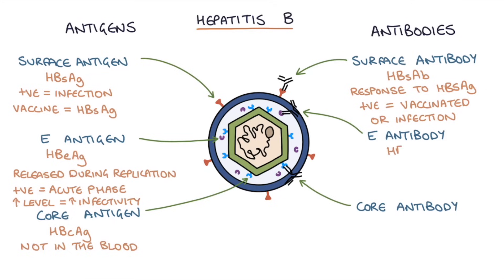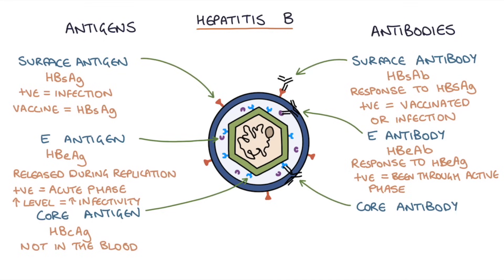The hepatitis B E antigen implies that the patient is in an acute phase of infection and the virus is replicating very quickly — E antigen escapes during replication. The level of the hepatitis B E antigen correlates with infectivity, but over time the immune system will respond and start to produce E antibodies. When the hepatitis B E antigen is negative but the hepatitis B E antibody is positive, this implies the virus has stopped replicating and the patient is less infectious, indicating a good immune response.